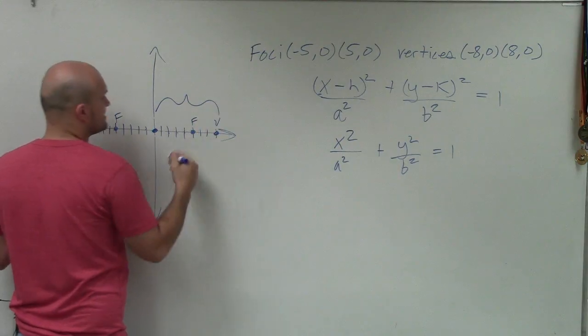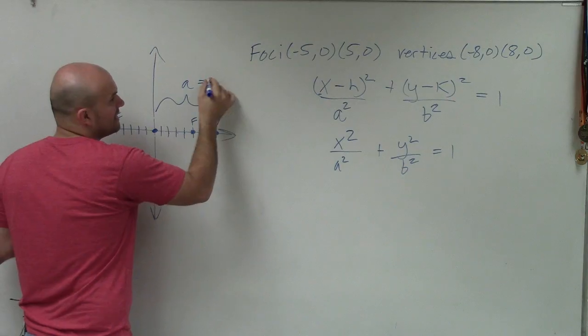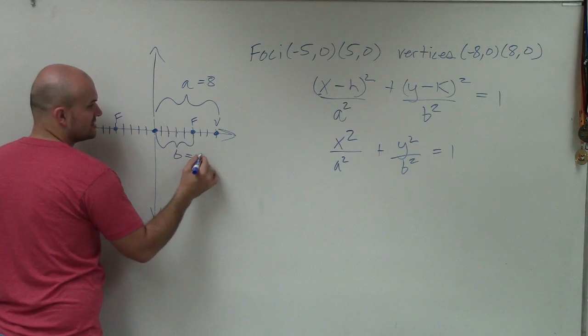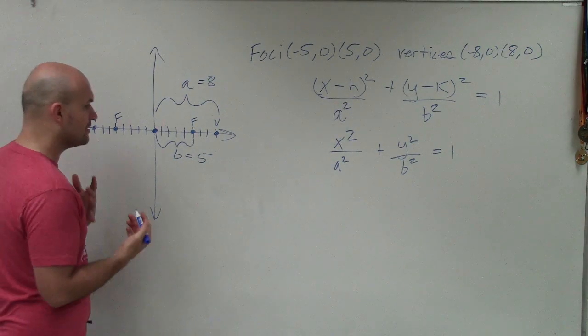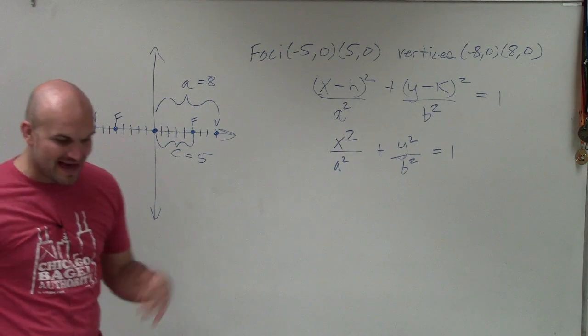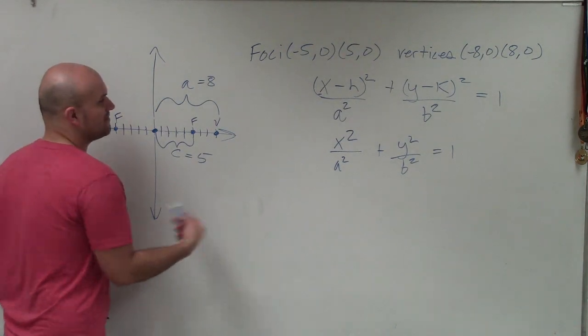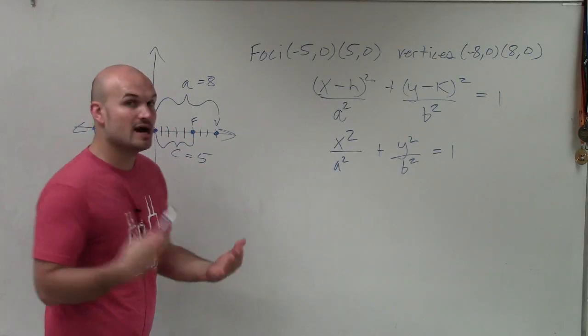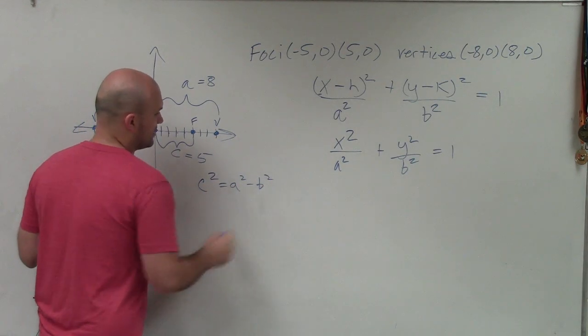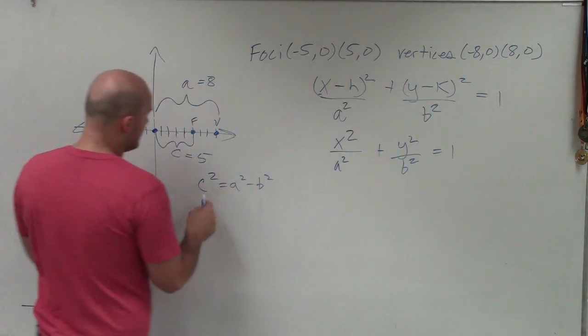So again, the distance a is the distance from the center to your vertices, that absolute distance, which is a. Well, a equals 8. The absolute distance from your center to your foci is going to be, I'm sorry, that is c. So that is c. The next thing now is we still need to figure out what b is. So again, if you remember when we were working on graphing them, one thing to find out what c would be, we'd have c² = a² - b². This is how your foci, your vertices, and your center all relate to each other.